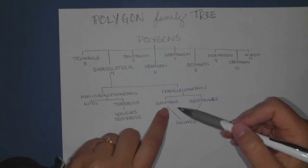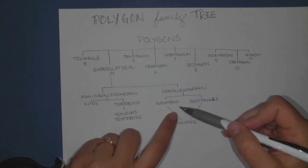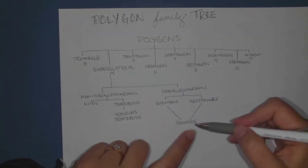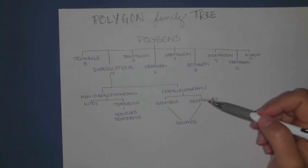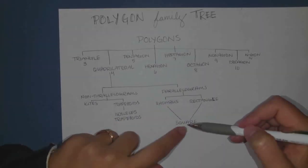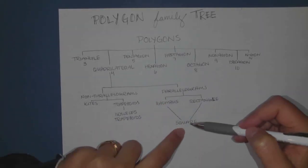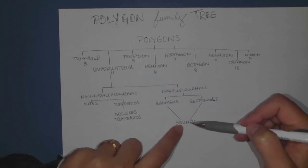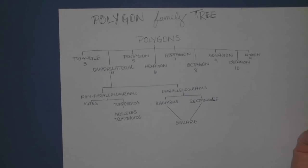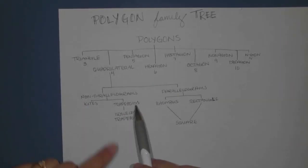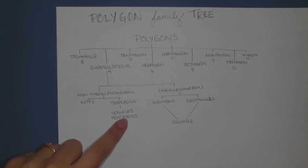In the parallelograms category we have rhombuses — which can be called rhombuses or rhombi as the plural — rectangles, and then squares. Everything that's true about parallelograms is also true about rhombuses and rectangles, and everything true about those is also true about squares. So a square is like the most specific shape you could have.